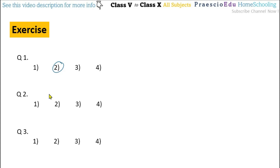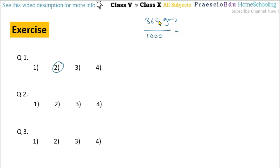Question number 2: 360 grams equals how many kilograms? As we know, 1 kg equals 1000 grams, so divide by 1000 — the decimal point shifts 3 places. So 360 grams equals 0.36 kg, and this is given in option number 3.